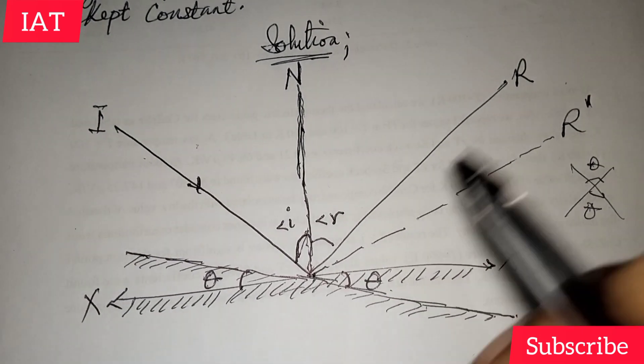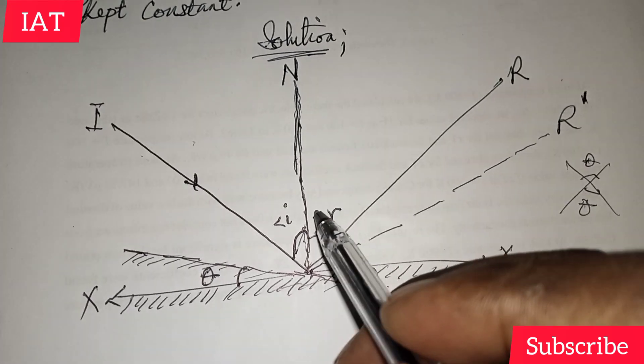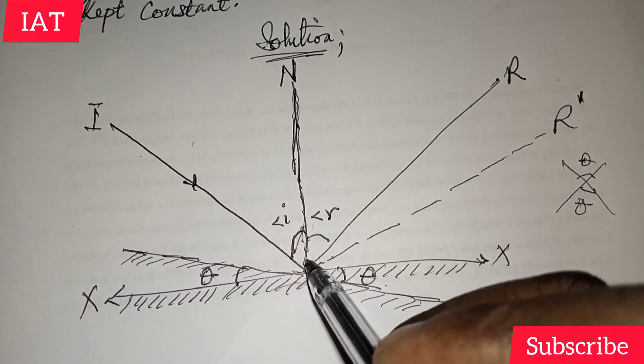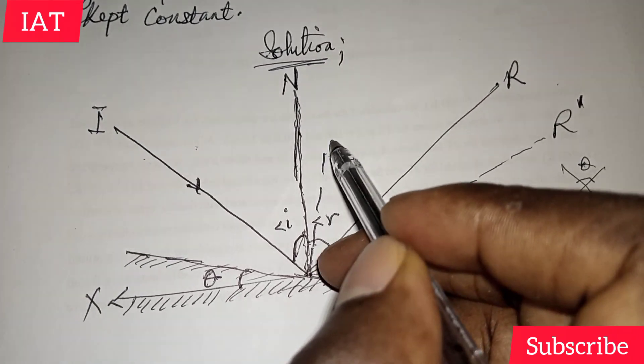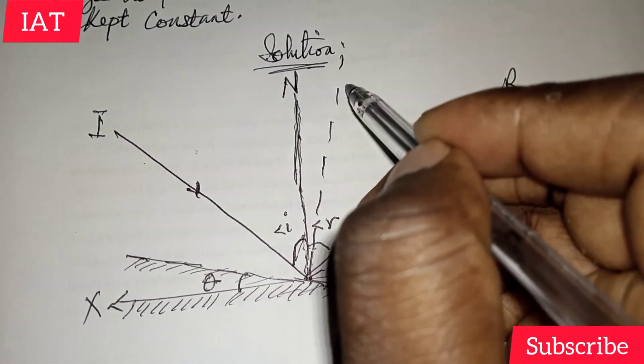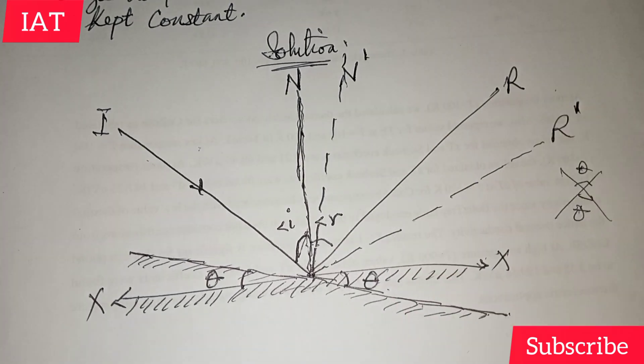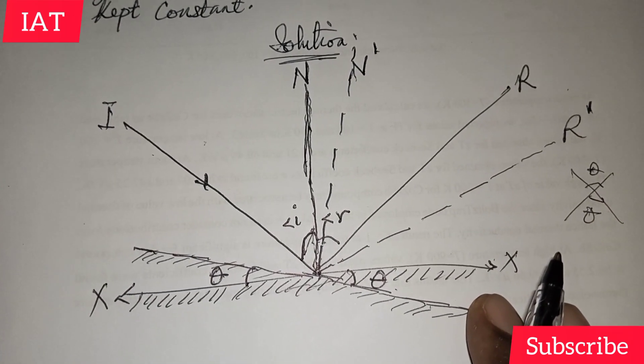Alright, it will create another normal here. It will create another normal here. So we have it to be like this. We can just make this N prime. Alright.